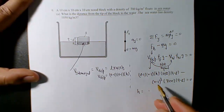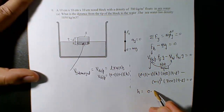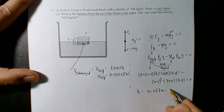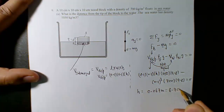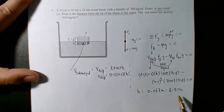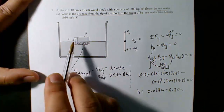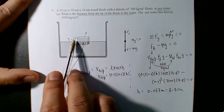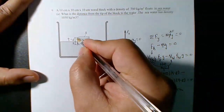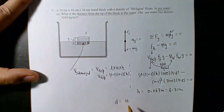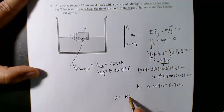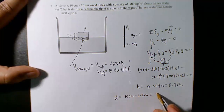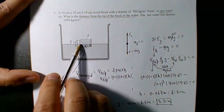Out of the 10 cm total height, 6.7 cm is underwater. So distance D from the top of the block to the water surface is 10 cm − 6.7 cm = 3.3 cm above water. That's the answer.